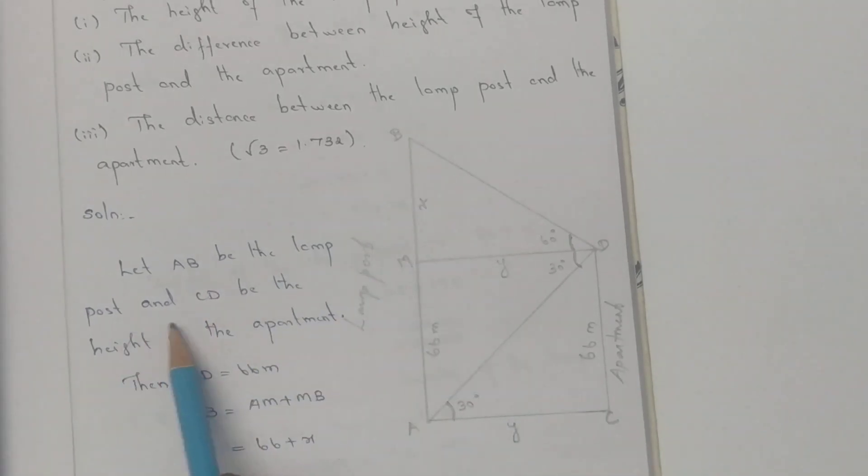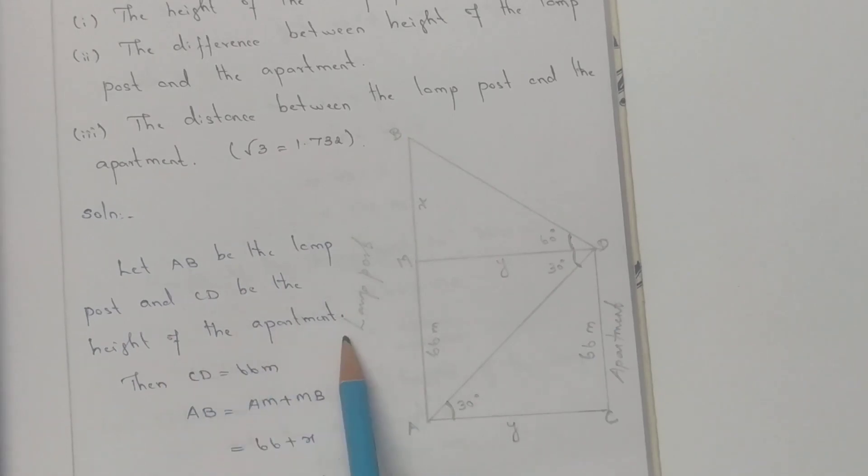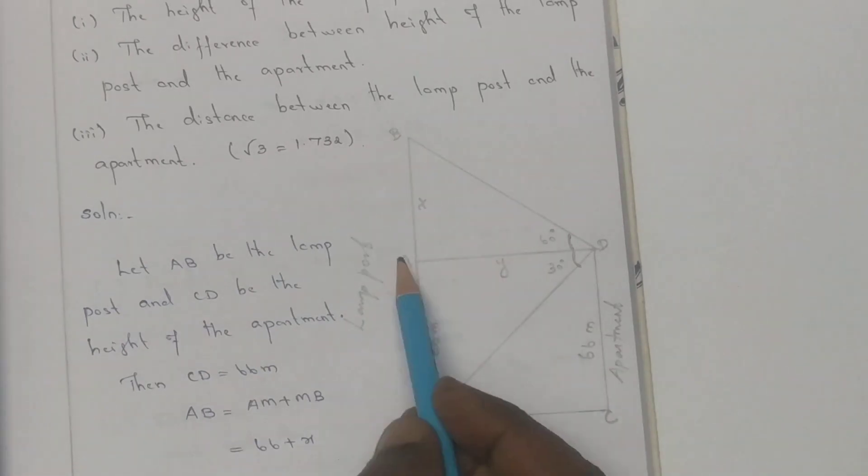AB is the lamp post, CD is the height of the apartment. CD is 66 meters, AB equals AM plus MB which is 66 plus X.